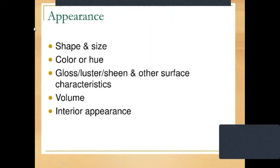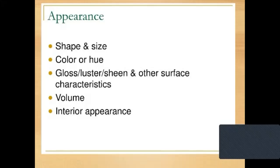In the appearance point, we consider: shape and size, color or hue, gloss, luster or sheen, other surface characteristics, and volume. Shape and size refer to the shape and size of the food product. Color or hue means whether the color is attractive or not. Gloss, sheen, or luster refers to surface characteristics. Volume refers to the amount or percentage of volume — the size and shape proportion.